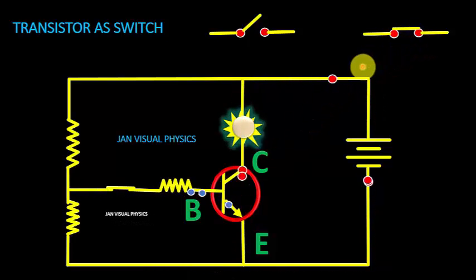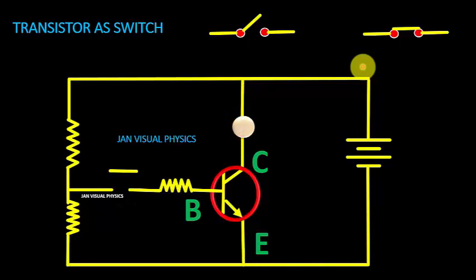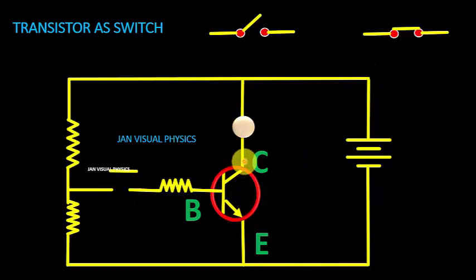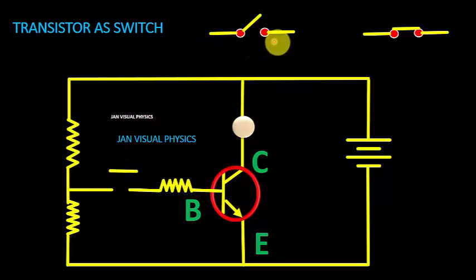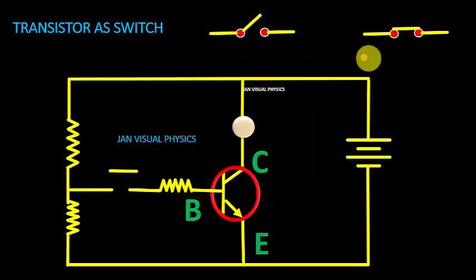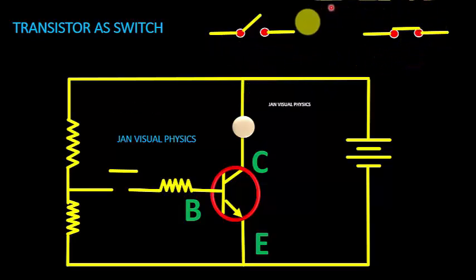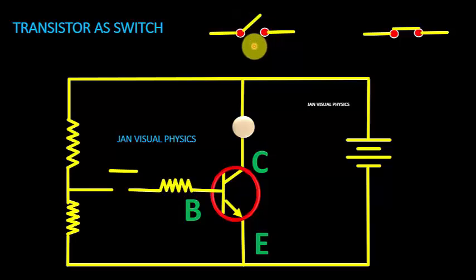If we remove the signal from the base, we will see that current will not pass through the transistor. In this state, the transistor behaves like an off switch. So a transistor can behave as an on switch or off switch.